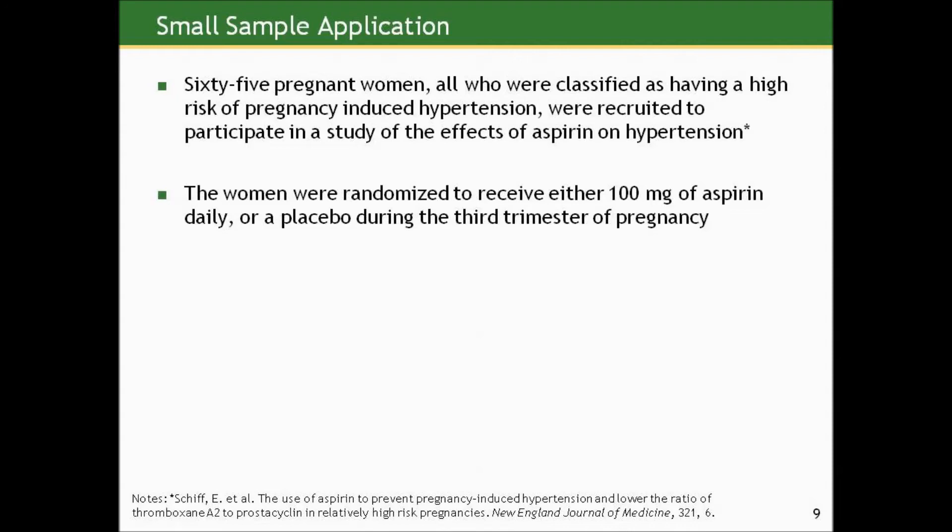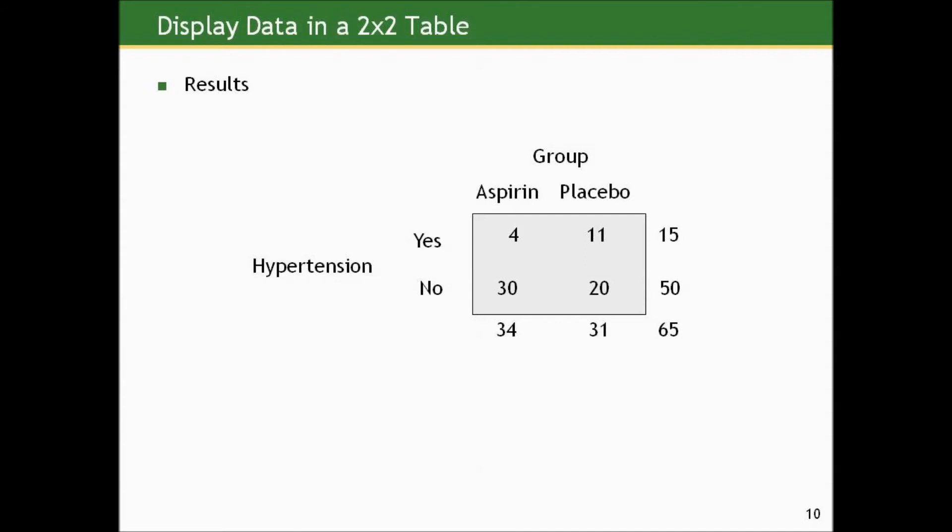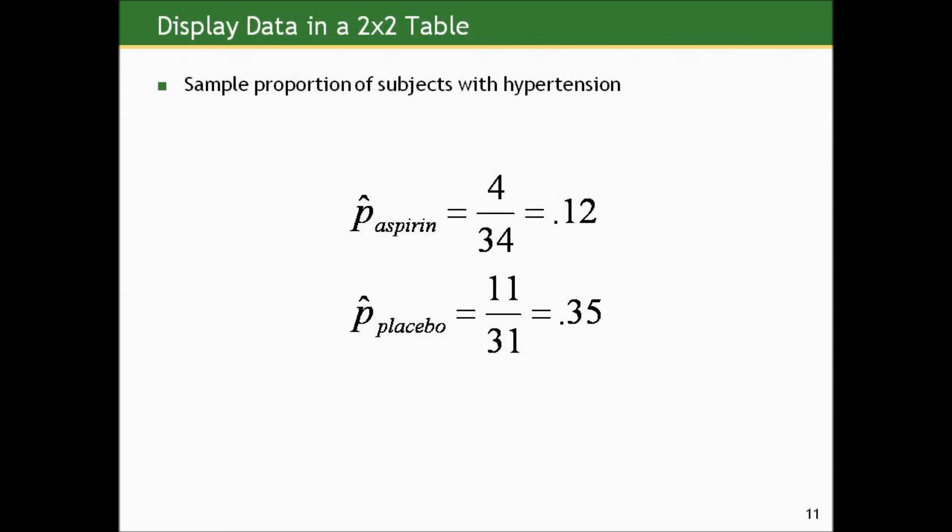Let me show you another application, though, that's a smaller sample application. We're only dealing with 65 pregnant women, all who are classified as having a high risk of pregnancy-induced hypertension. These women were recruited to participate in a study of the effects of aspirin on hypertension. These women randomized to receive either 100 milligrams of aspirin daily or a placebo during their third trimester of pregnancy. And here are the results from this study. In the aspirin group, 34 of the 65 women were randomized to the aspirin group. Four of the 34 ended up with pregnancy-induced hypertension. Of the 31 women randomized to the placebo group, 11 ended up with pregnancy-induced hypertension. So this is a sample proportion in the aspirin group of 12% compared to 35% with pregnancy-induced hypertension in the placebo group.